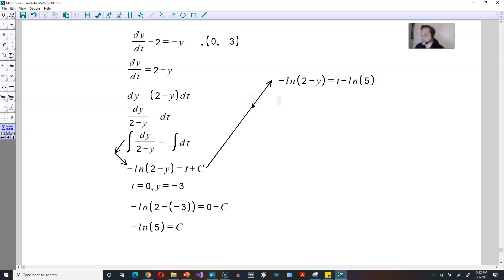What you want to do now is just divide both sides by -1 to simplify it, so it's going to give you ln of (2 - y). On the right-hand side, the signs switch, so it's going to be -t plus ln of 5. Continue.